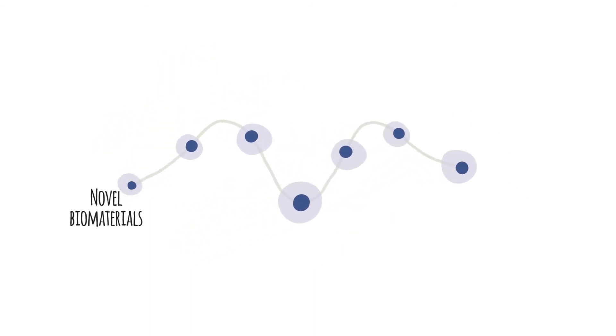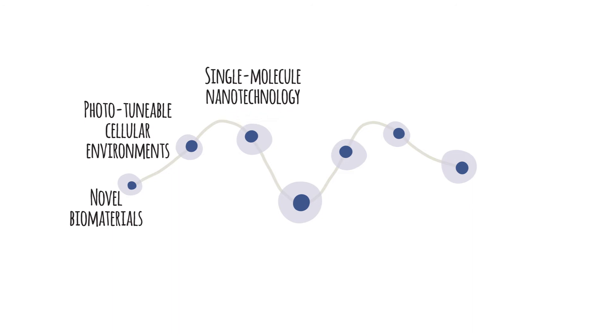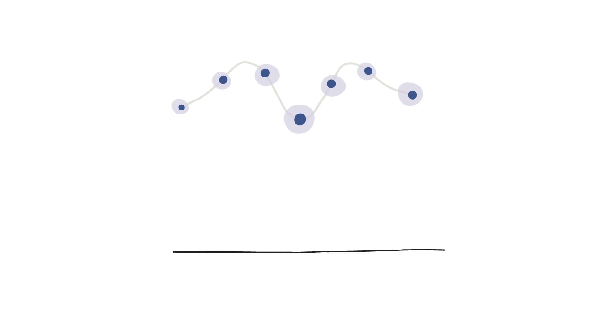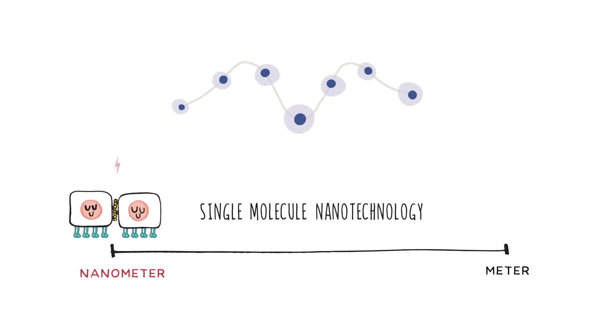To find out, the mechanocontrol project will put together a toolkit to uncover cells' responses to forces at every scale. Like a well-stocked toolbox, the kit will include different tools in which the seven mechanocontrol partners are experts. These will range from single molecule nanotechnology at the smallest scale to organoids and animal models at the organism scale.